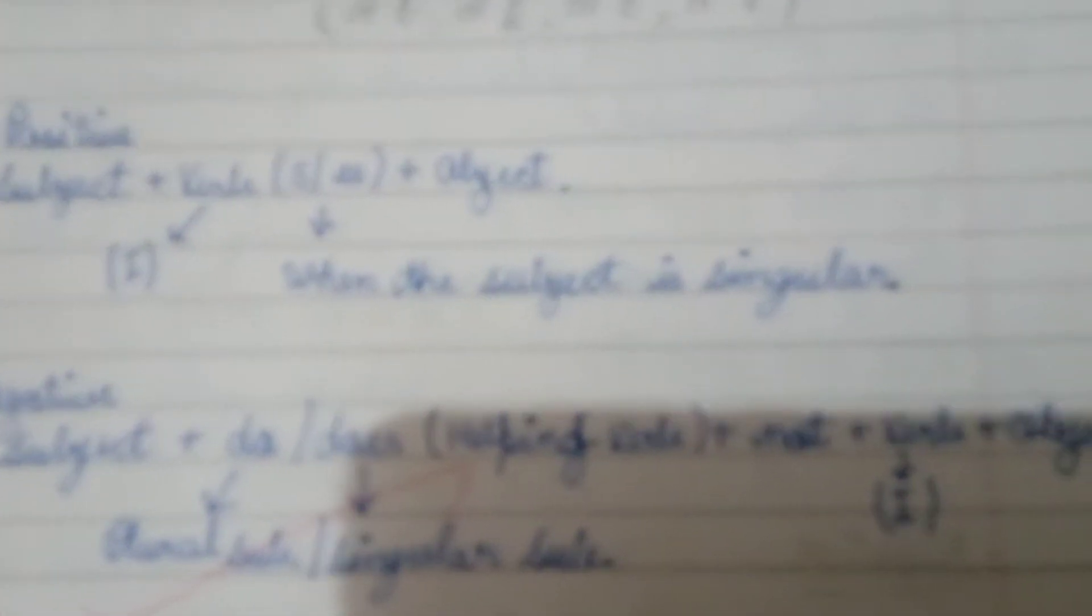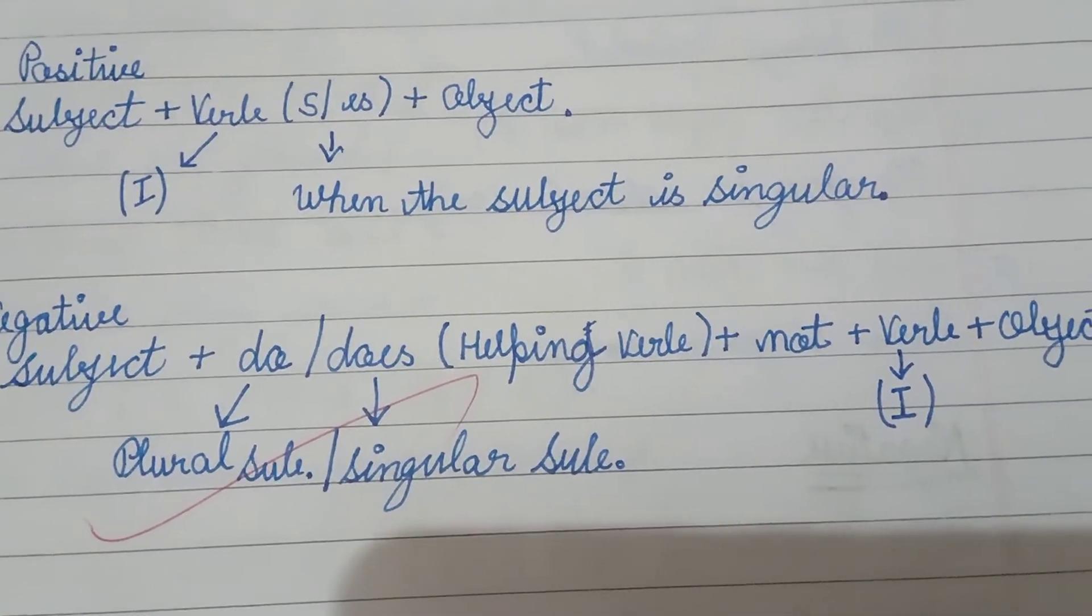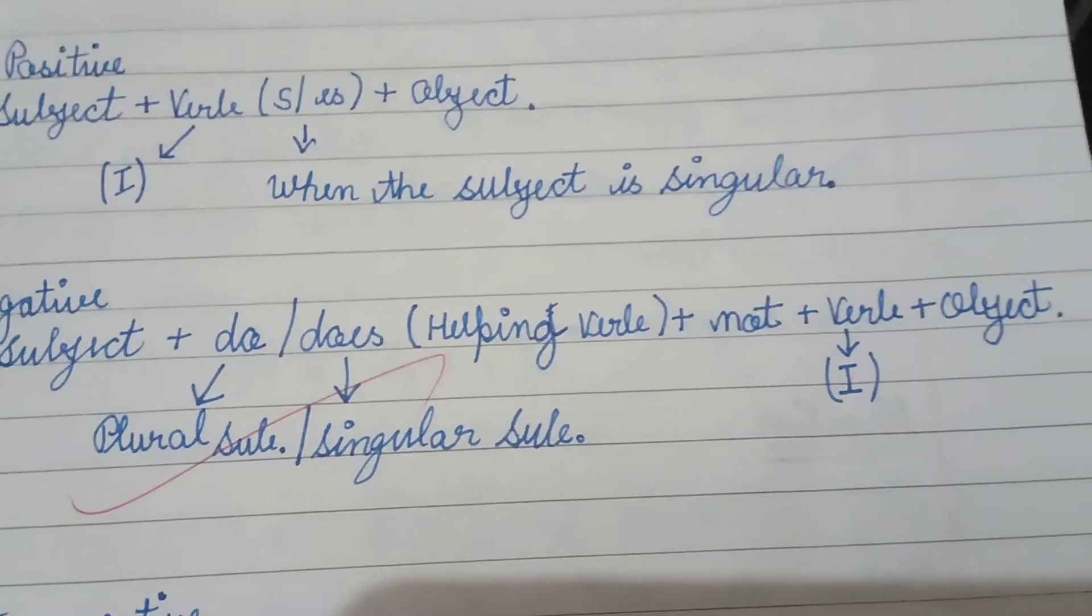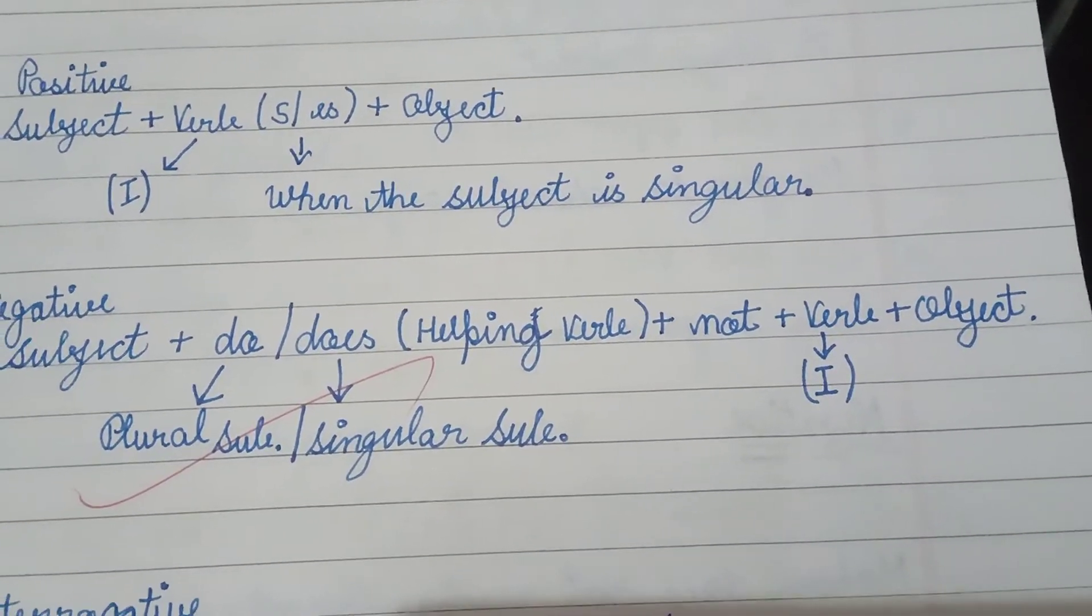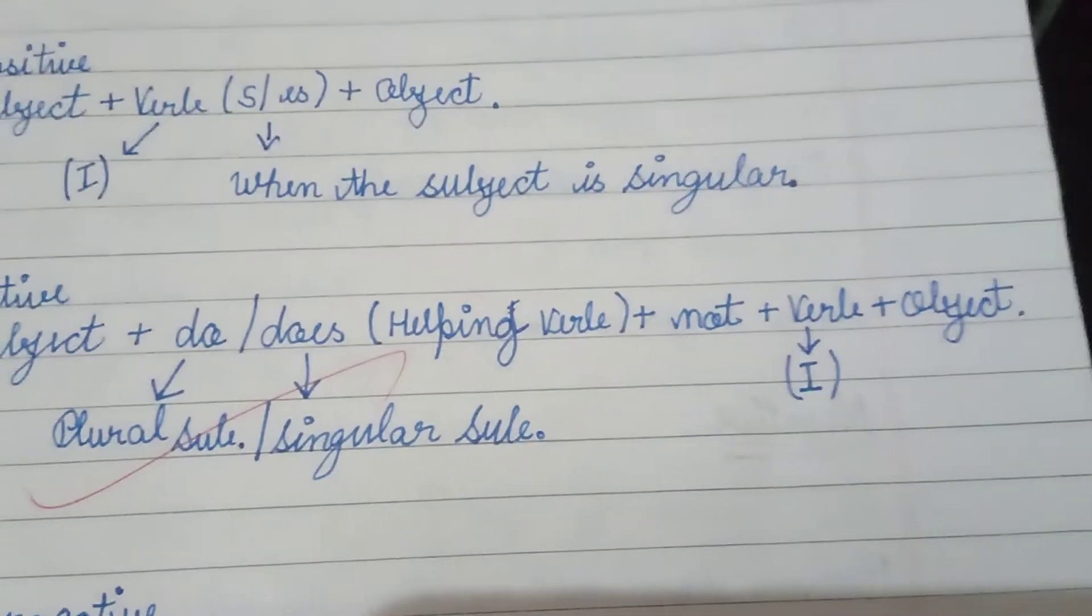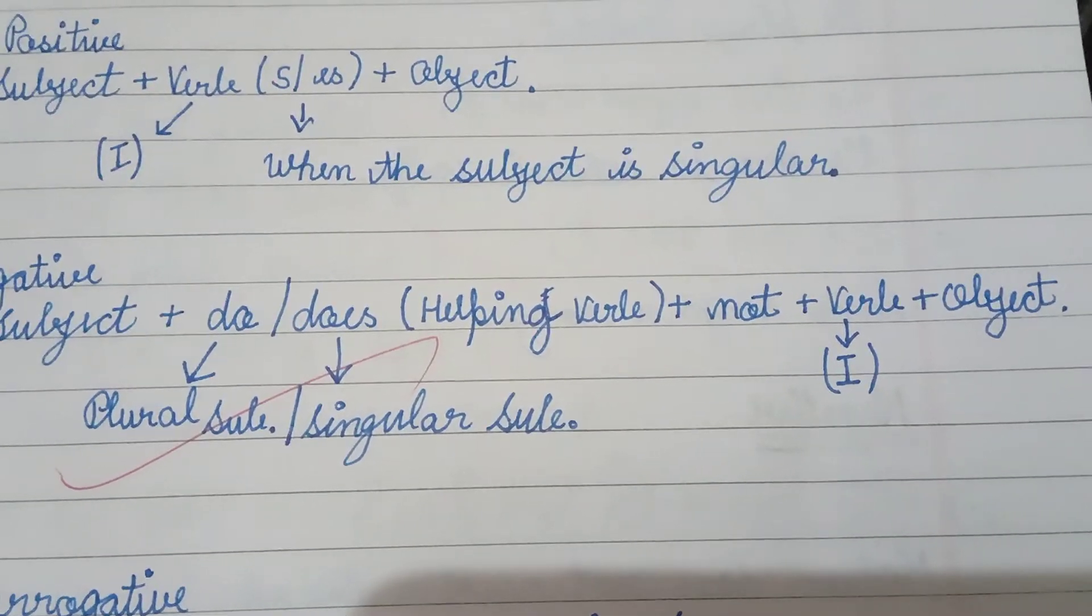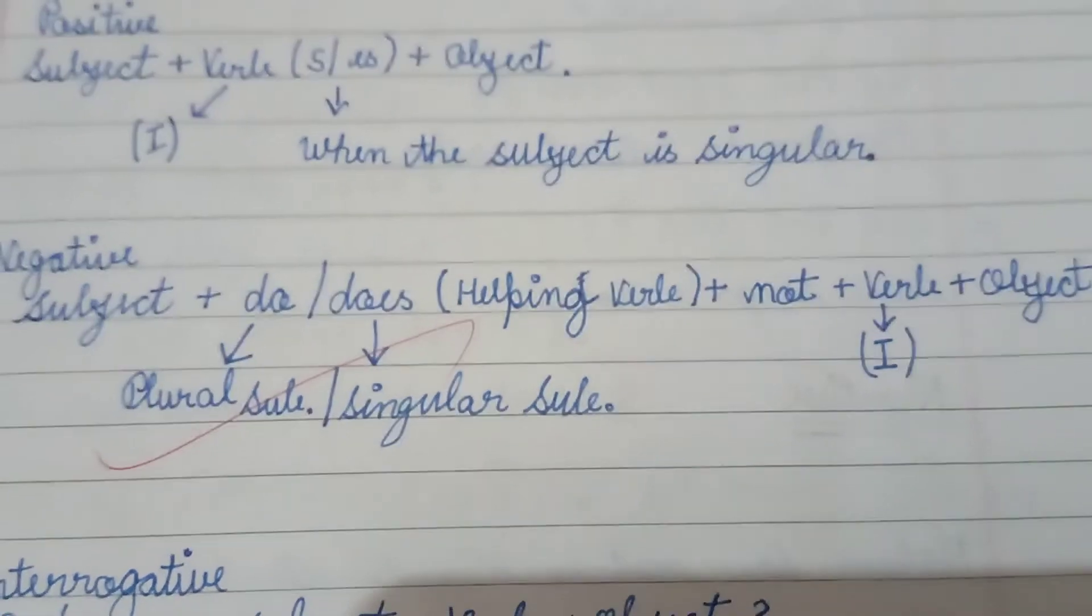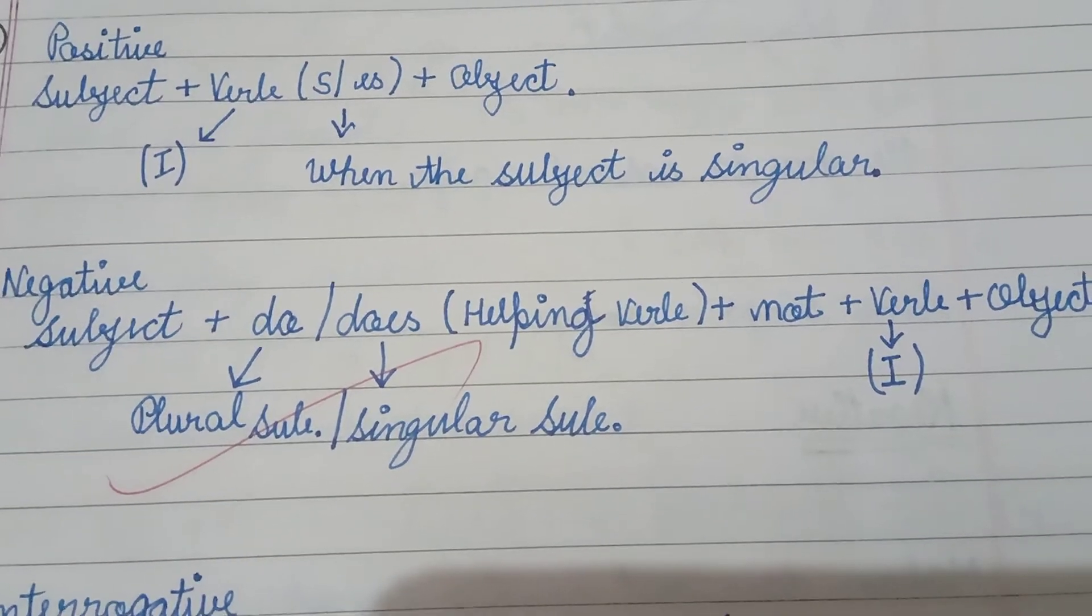Coming on to negative statement. Again, we will be following the same structure. Subject plus helping verb and word not to represent the negative statement. Then verb first form and then the object. Do and does are the helping or the auxiliary verbs here to help the main verb. Do will be used along with plural subject and does will be used along with singular subject.